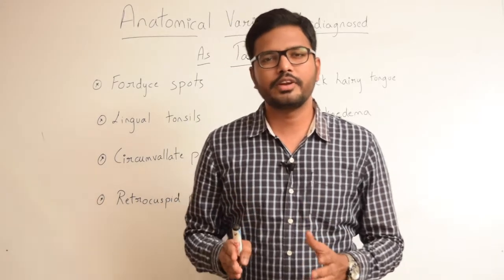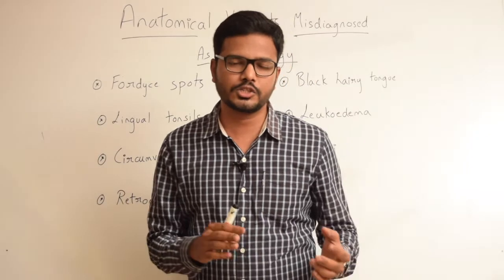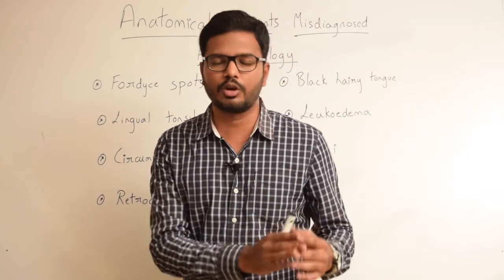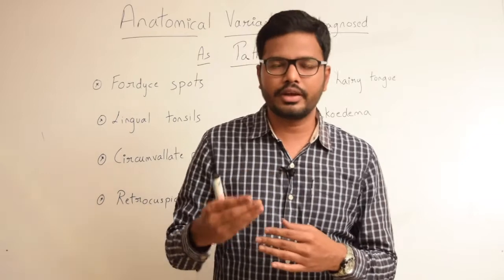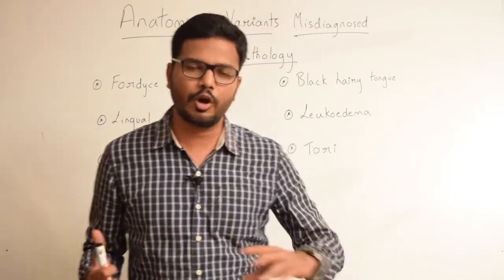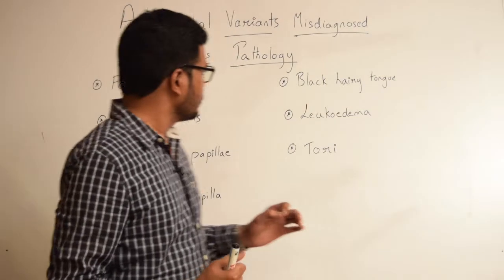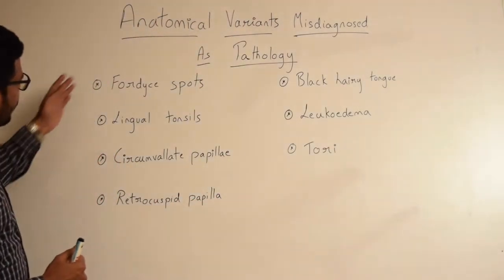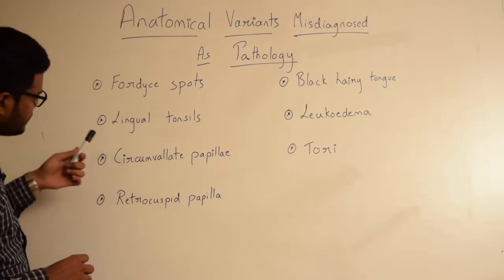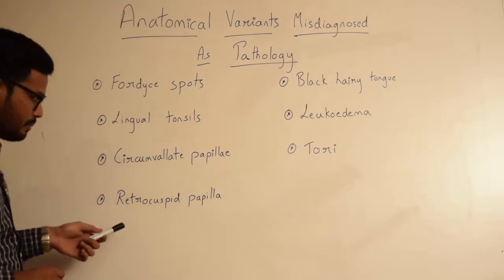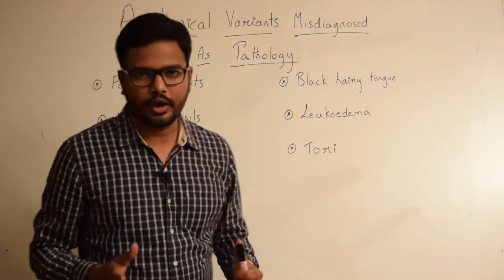In this video I will be discussing normal anatomic variants which are often misinterpreted as pathology. We have various normal anatomic variants or normal structures which are often misdiagnosed as lesions. The common ones are Fordyce spots, lingual tonsils, circumvallate papilla, retrocuspid papilla, black hairy tongue, leukoedema, and tori.